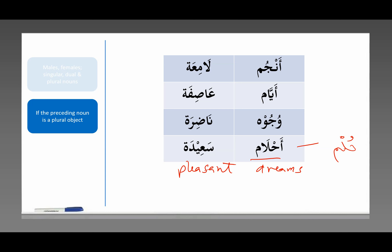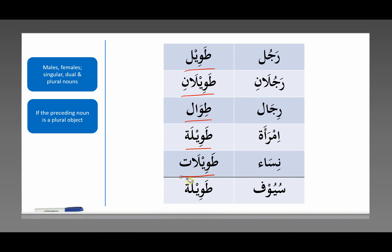So what we're seeing here is that all of these plural objects are described as if they're feminine singular. And here is that chart — ta'wil, ta'wilan, ta'wil, ta'wila, ta'wilat — and here at the end we have a plural object: suyuf. What are suyuf? Swords. So if we want to say long swords, we use ta'wila, just like ta'wila for imra'a, a tall woman. Suyuf ta'wila — long swords. A very peculiar rule in the Arabic language that we just have to get used to. Alhamdulillah.